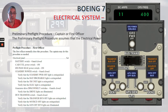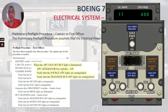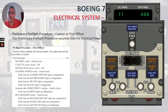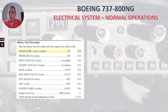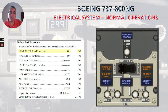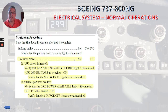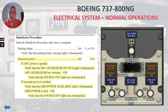Verify that the source of lights are extinguished. When the APU gen off bus light is illuminated, APU generator bus switches on. Verify that the source of lights are extinguished and the TR bus off lights are extinguished. For the before taxi procedure, generator one and two switches on — select both switches to the on position. If APU power is needed, verify that the APU generator off bus light is illuminated, then APU generator bus switches on and on. Verify that the source of lights are extinguished.